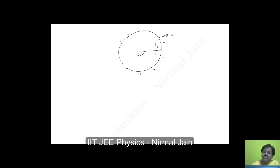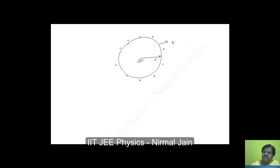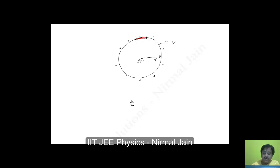To proceed with this question, let us take a very small elemental segment of this ring. We take a very small segment of this ring, and this angle is let's say dθ.